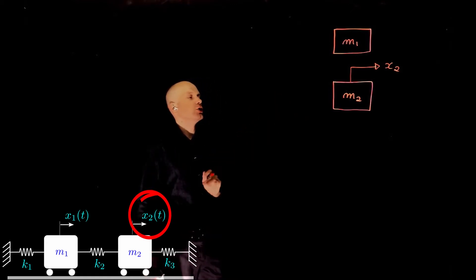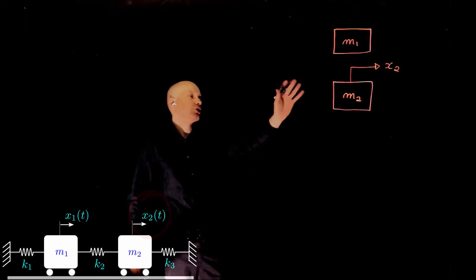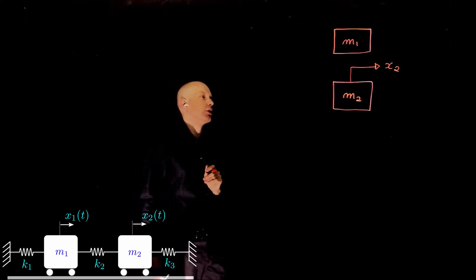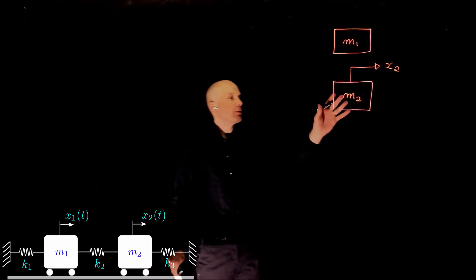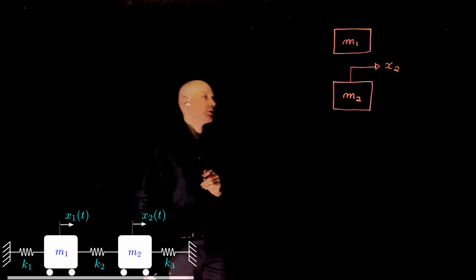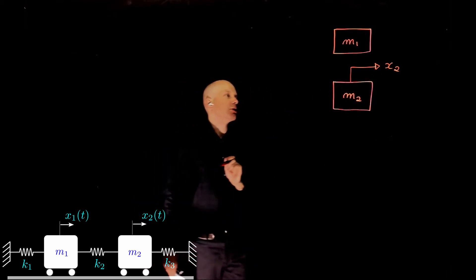And then derive all the equations as functions of displacement. Well, if m2 is moving to the right, because now the input is the displacement, x2,